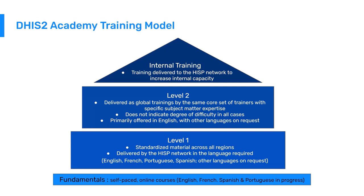The DHIS2 Academy model is broken up into four components. At the base level, we have our fundamentals courses. This is where we recommend those who are not familiar with DHIS2 to get started. There are several pathways and courses depending on the type of skill set a person needs to focus on. These courses are online, self-paced, and free, with multiple languages currently supported or in the pipeline.